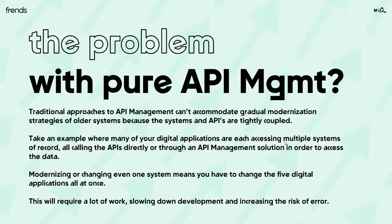all of those are consuming data and business functionality — either calling APIs directly or through an existing API management solution. The problem becomes that if we want to change even one of those applications — modernize it, switch it out, or split functionality into two separate systems — any change happening on the back-end means you'll probably have to apply extra logic in your API management solution to account for those changes.